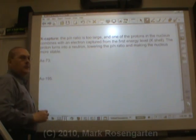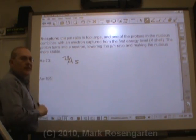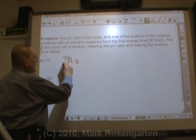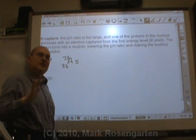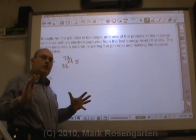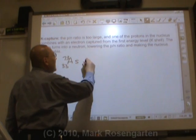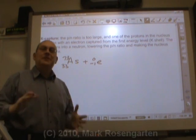For arsenic 73, we need the atomic number. The atomic number of arsenic is 33, undergoes K-capture. Now what this means is, again, it's absorbing an electron from the first energy level, the K-shell, it's capturing an electron. This is the opposite of beta decay.